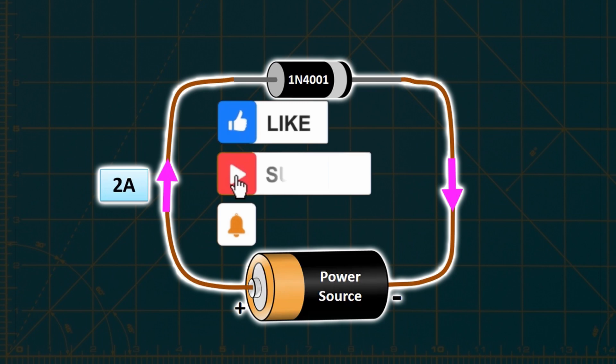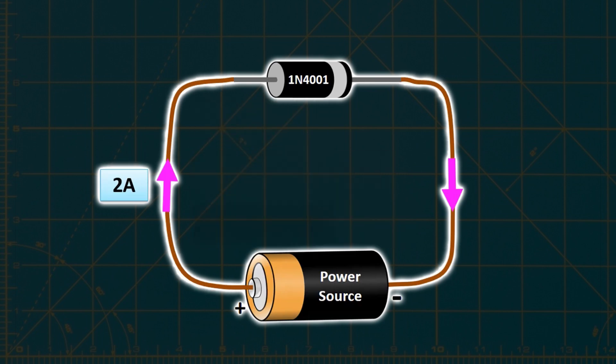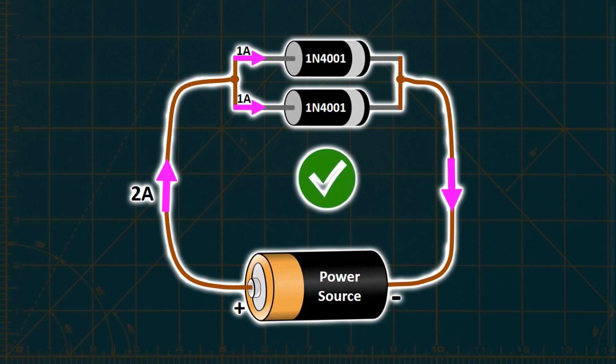Now, let's imagine a scenario where our circuit has a current of 2A. If we connect a 1N4001 diode, which can handle a maximum of 1A, it will be damaged. In such cases, if we connect two 1N4001 diodes in parallel, the main current of 2A will divide into 2, allowing 1A to flow through each diode. This way, we can use the diodes without causing any damage.